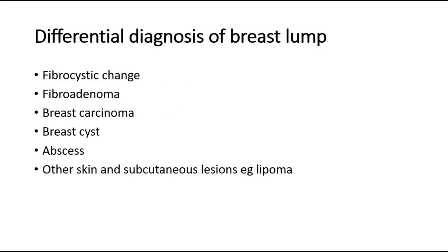If there is a breast lump, the examiner might ask for our differential diagnoses. Depending on the appearance of the lump, these include: fibrocystic change of the breast, fibroadenoma (more commonly seen in young patients), breast carcinoma (more commonly seen in older patients), and other differentials such as breast cysts, abscess, or other skin and subcutaneous lesions such as lipoma.